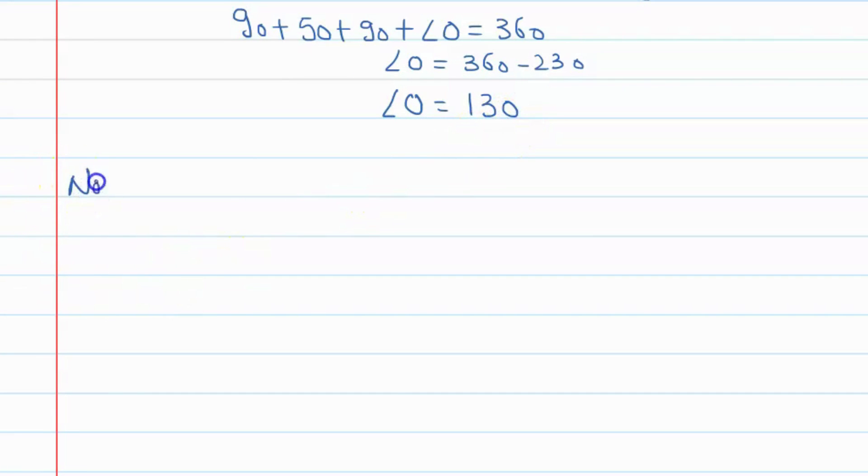Now in triangle OAB, if you see angle O plus angle A plus angle B, it is equal to 180 degrees because of angle sum property of triangle. Alright.